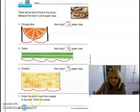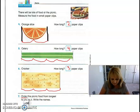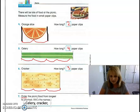Number seven says order the picnic food from longest to shortest. Order means we want to write the name of which food is the longest and then the next longest and then the shortest. Okay, so as we look at these, which food was the longest? Did you say celery? Yes, that's what I think also. All right, so I'm going to type celery first. And then what was the next longest? Yes, the cracker. And then the last one was the orange slice.